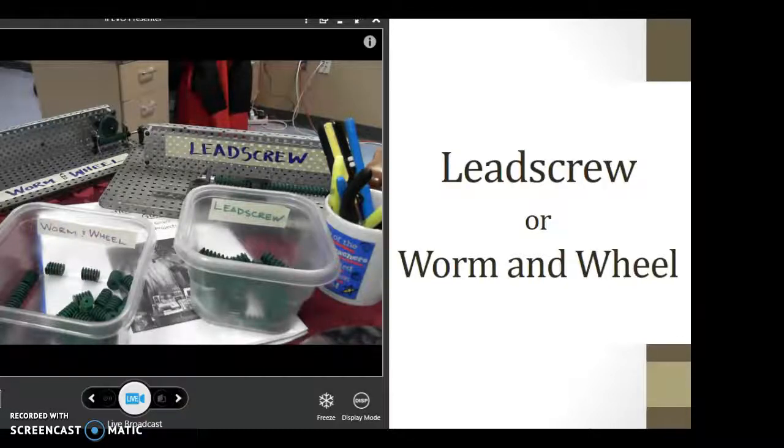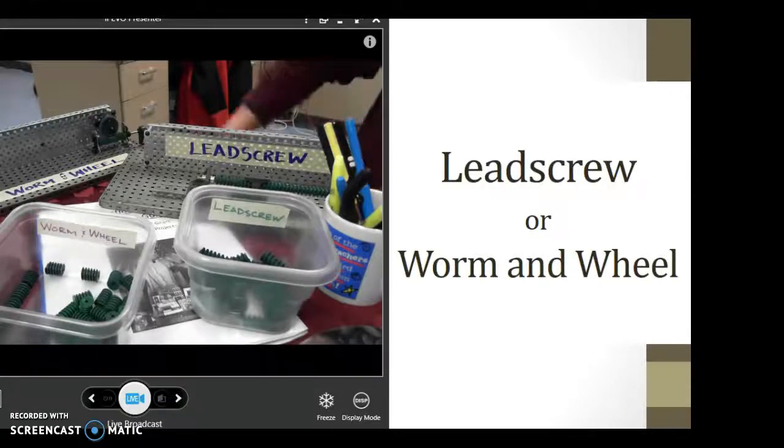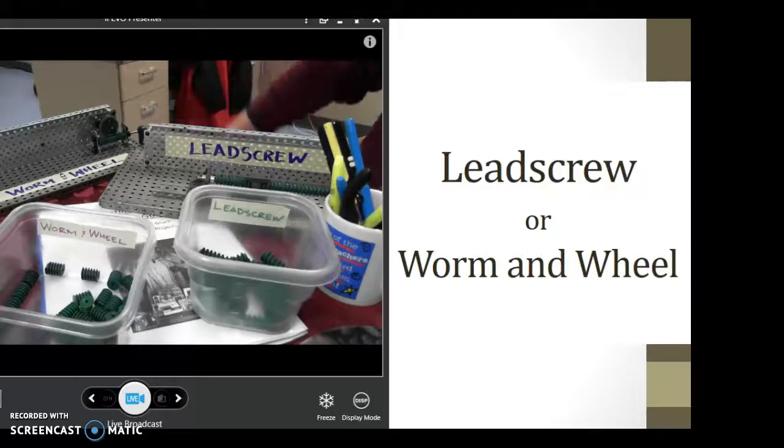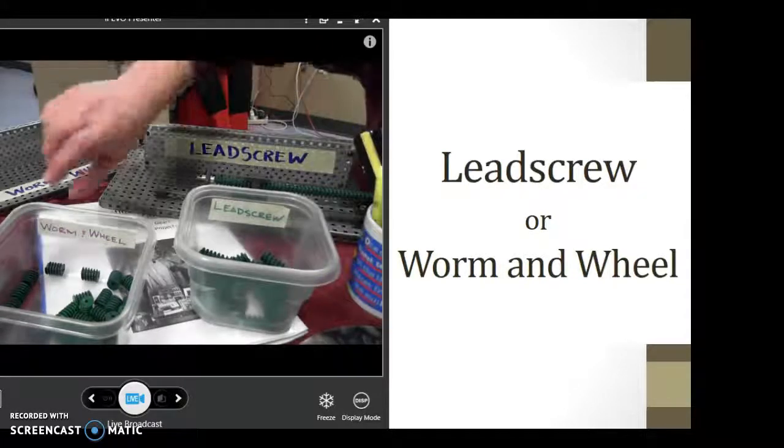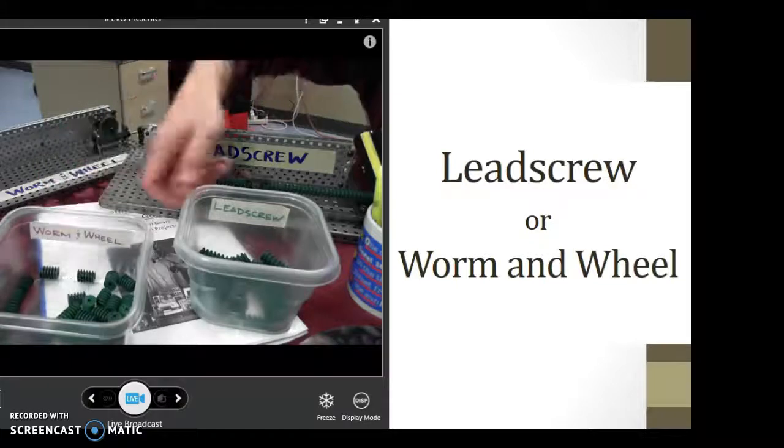All right folks, today's topic is leadscrew or worm and wheel. These highlight a different type of gear mechanism that we have. These are in the back of the room and they're labeled in containers worm and wheel or leadscrew.